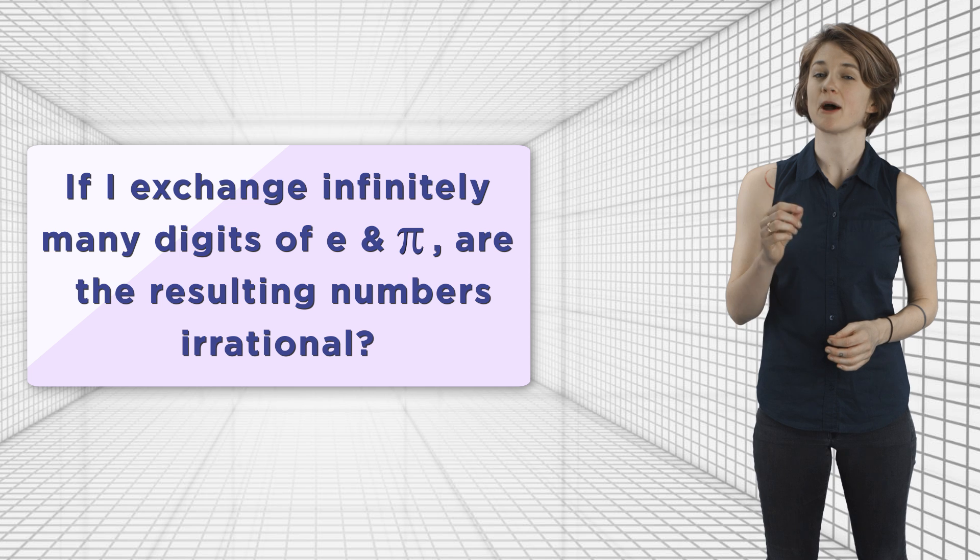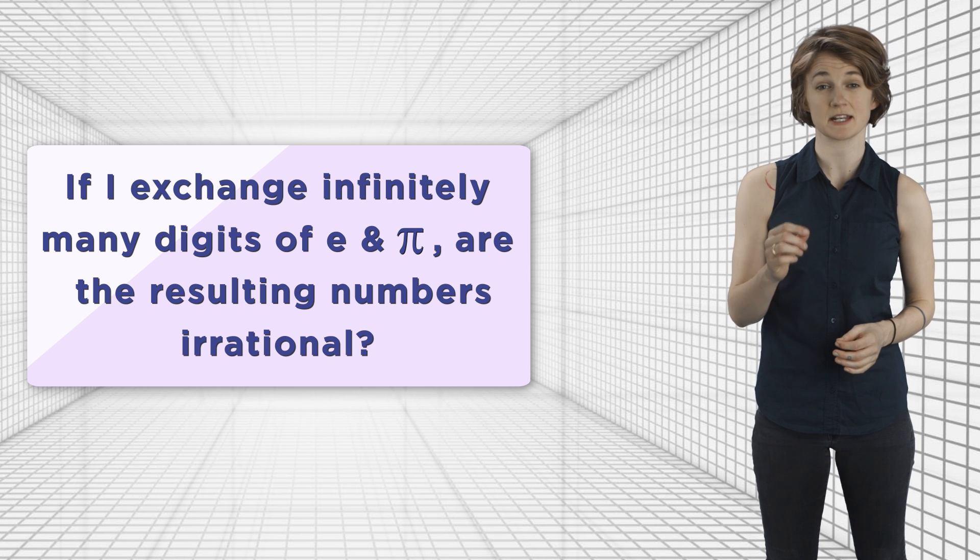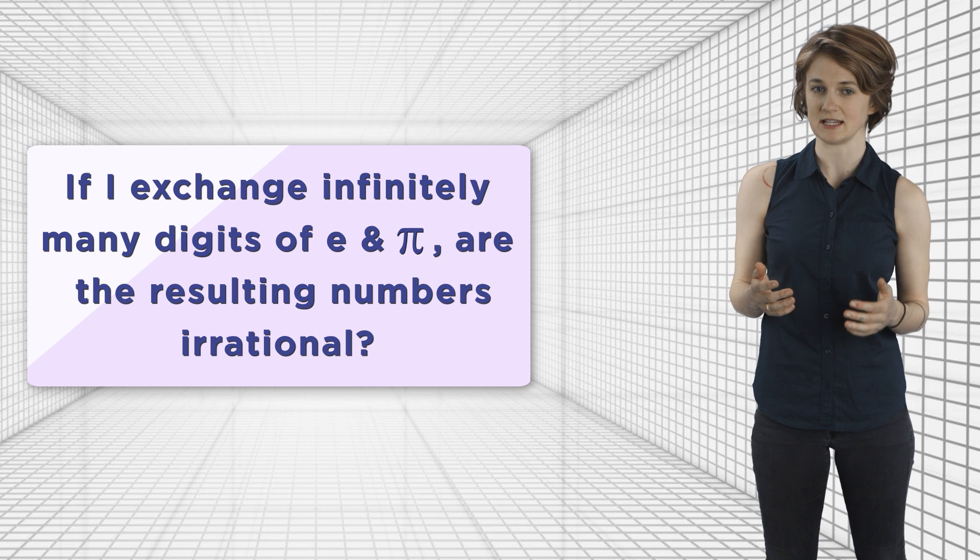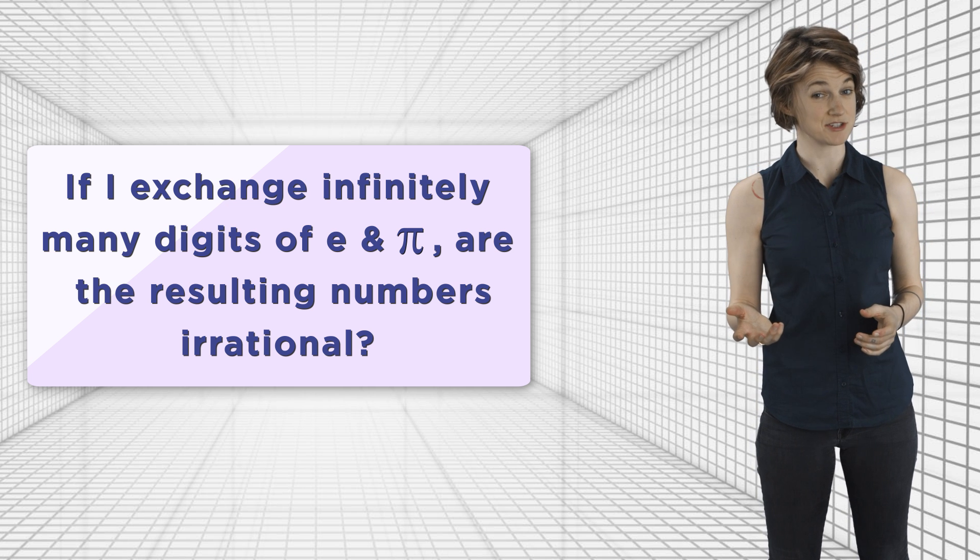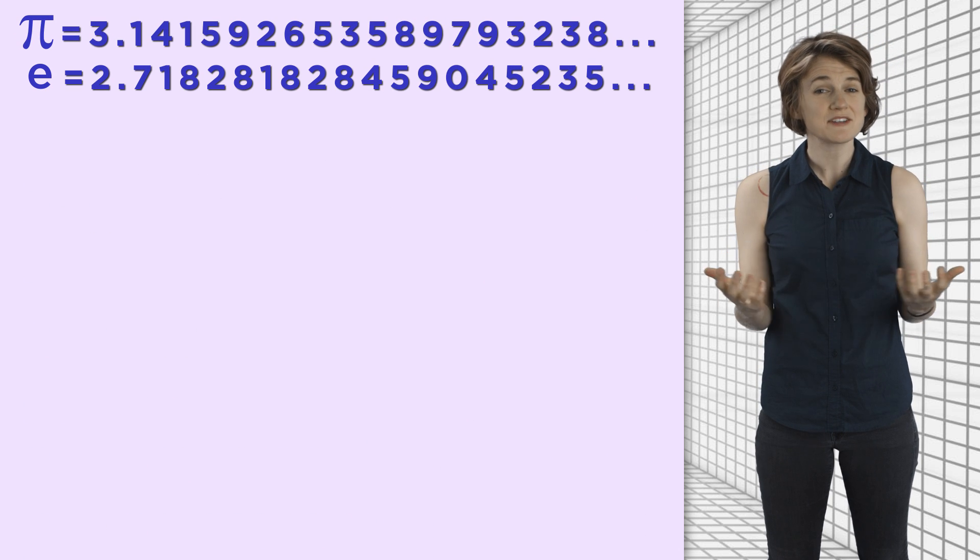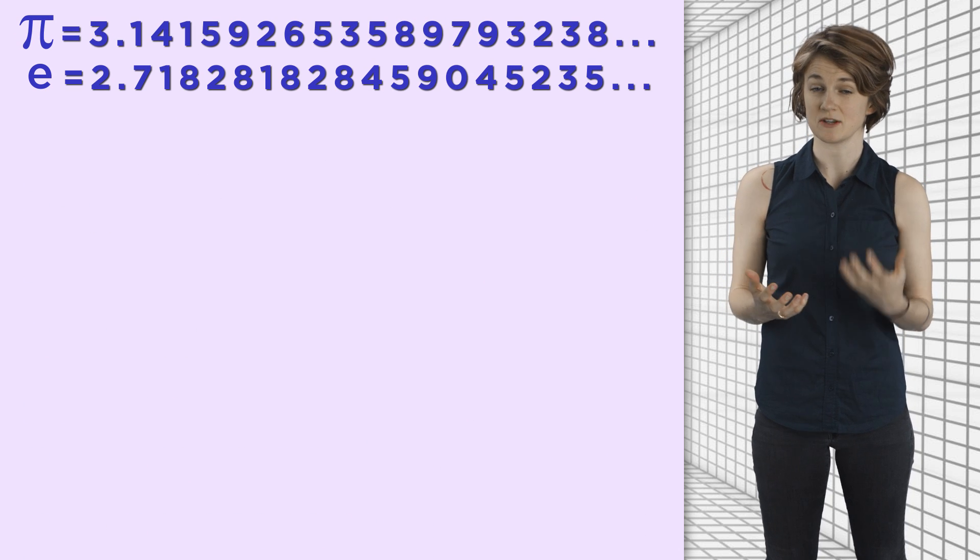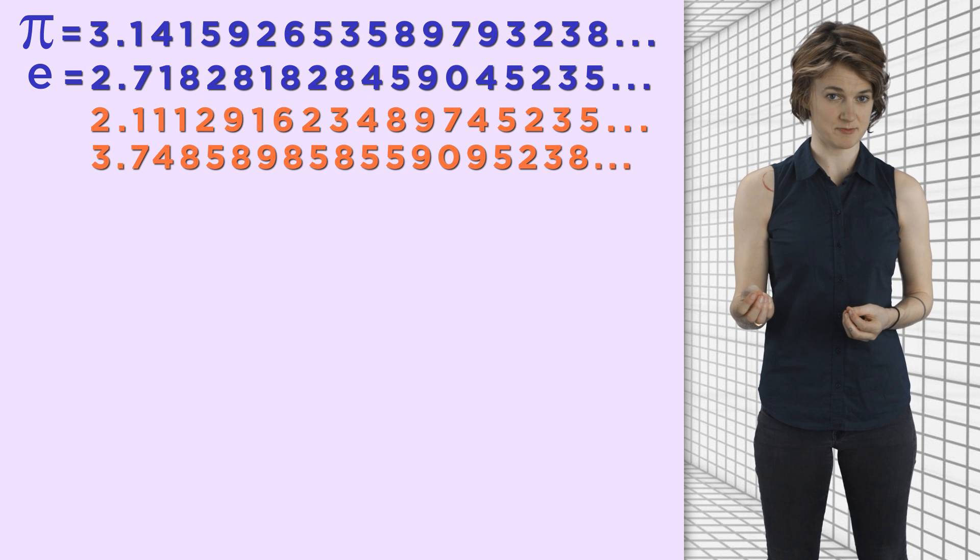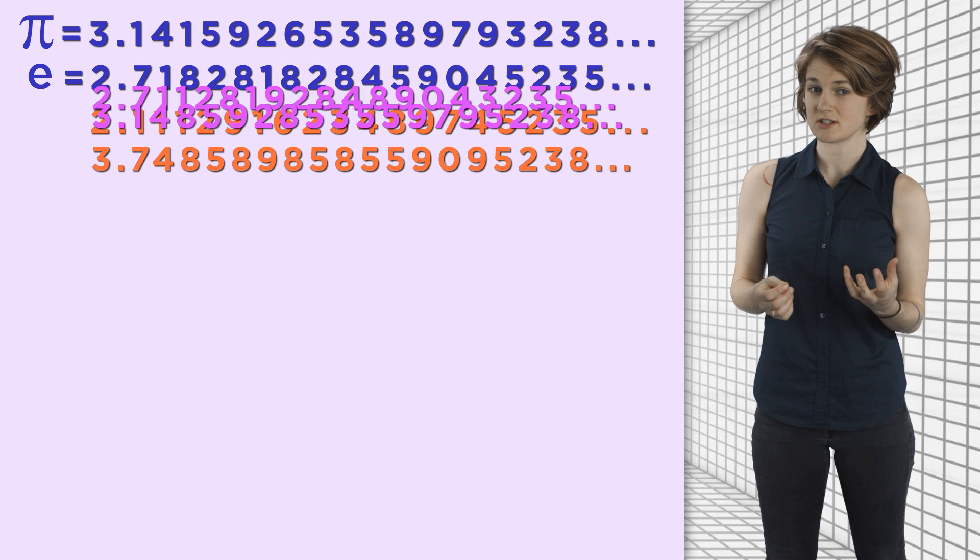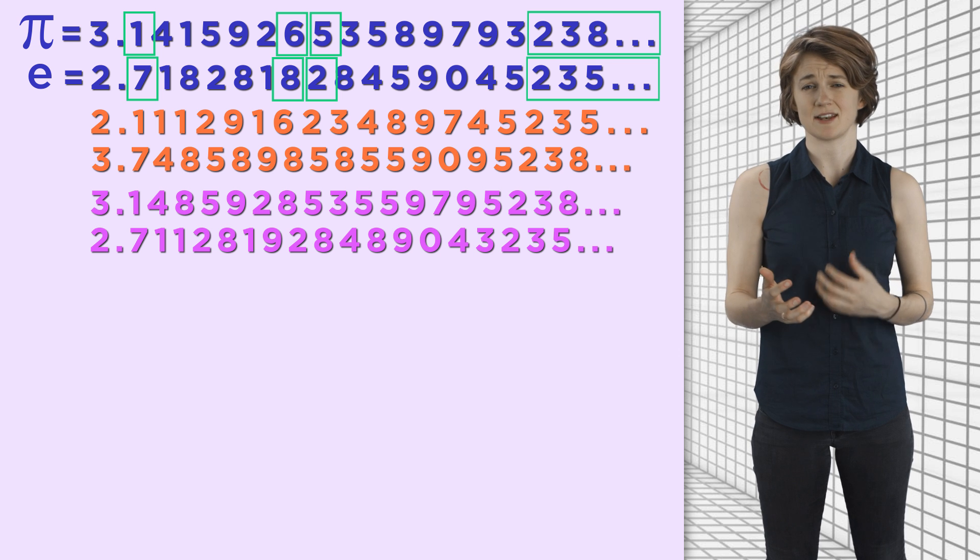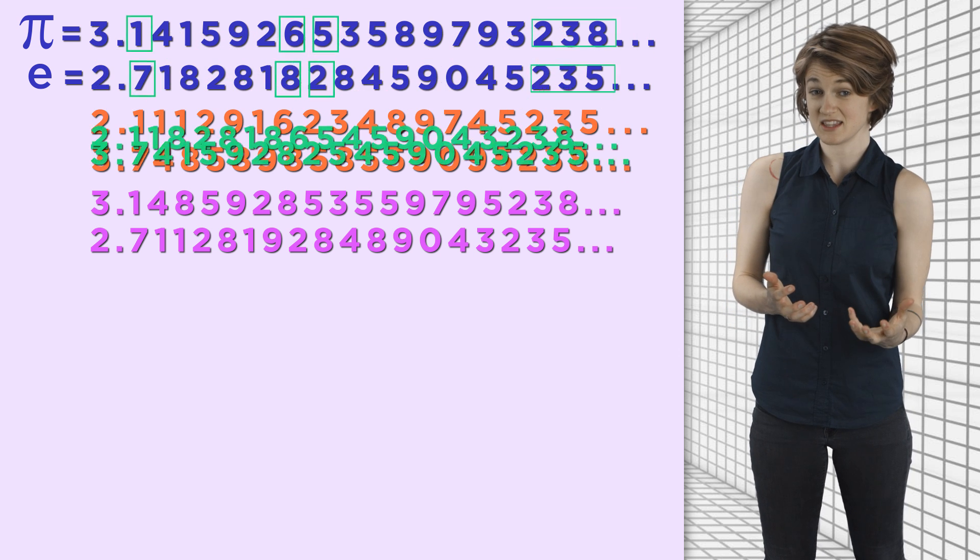Back to the original question, where Carmody is asking about two very specific numbers. If I exchange infinitely many digits of pi and e, are the resulting numbers irrational? Here's pi and here's e. There's a lot of different ways we could exchange infinitely many digits. We could exchange the odd digits to get this pair, or every fourth digit to get this pair, or the second, eighth, and ninth digits, and all the digits after the sixteenth digit to get these.